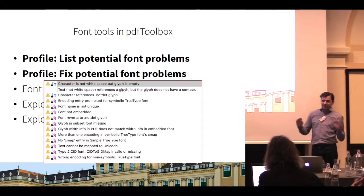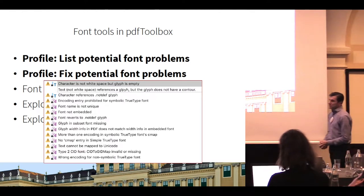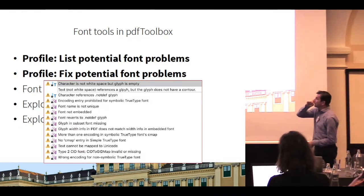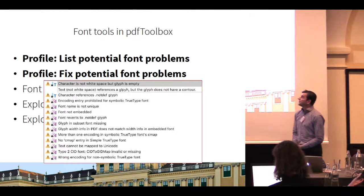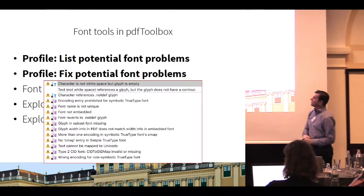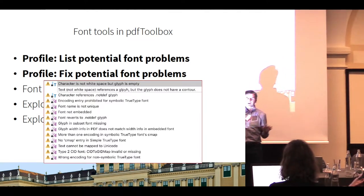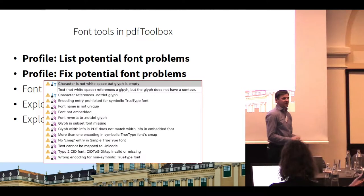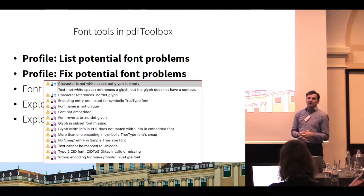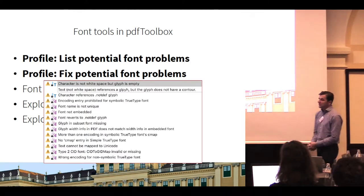First I want to start with the two profiles — they are predefined profiles, I think in Essential or Prepress Library. There is the 'list potential font problems' profile and in this profile we have put all font checks that we think are at least an indicator that something is difficult or even wrong in a PDF file.